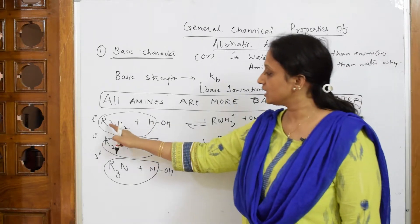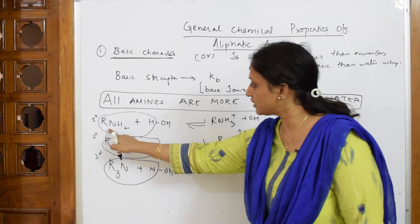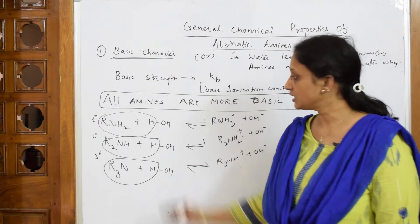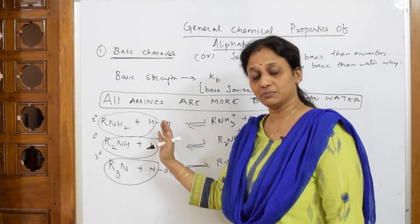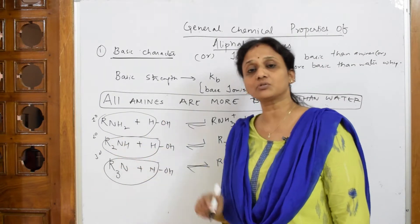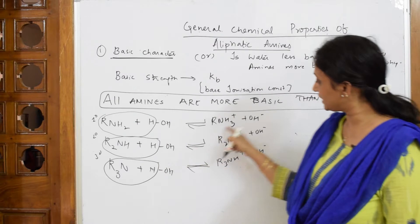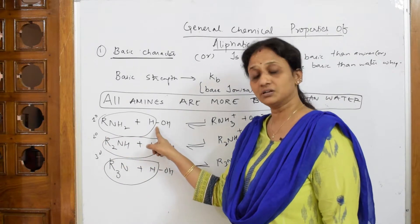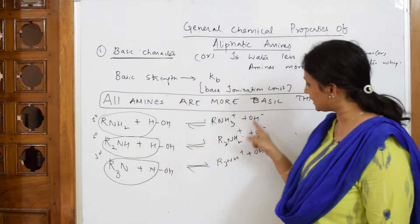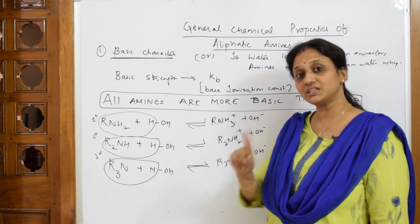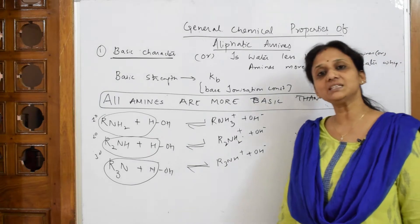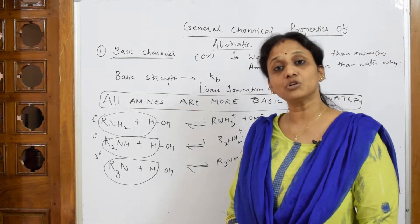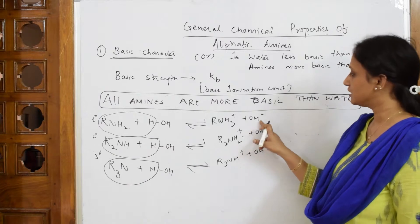These amines are releasing OH⁻ when dissolved in water. What are they doing? They are protonating — they take out the proton from water and release OH⁻. Aren't they stronger than water? The amine breaks the bond, picks up the hydrogen, and finally releases OH⁻ from water. That is the reason they are more basic than water — amines release OH⁻ when dissolved in water.